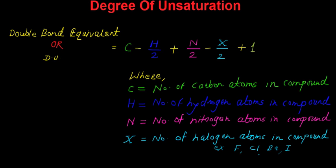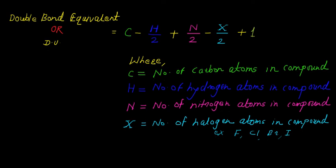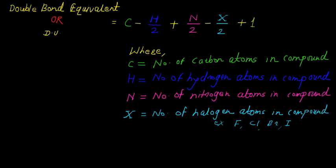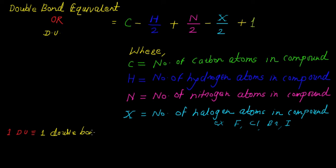If in any organic compound the double bond equivalent or degree of unsaturation is 1, it means you may have one double bond or you may have one ring in the organic compound.